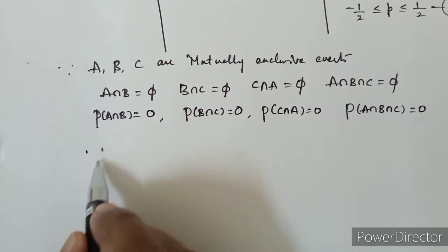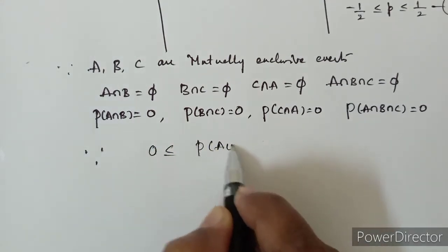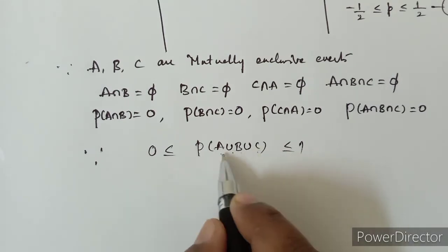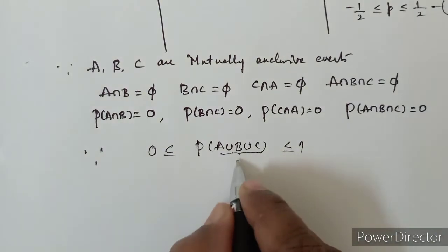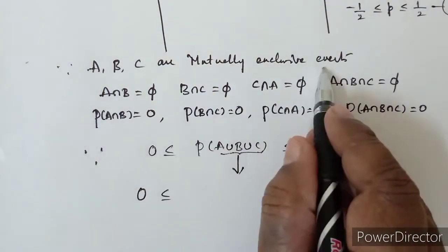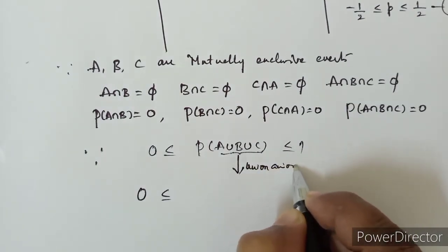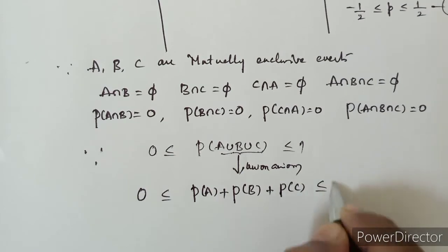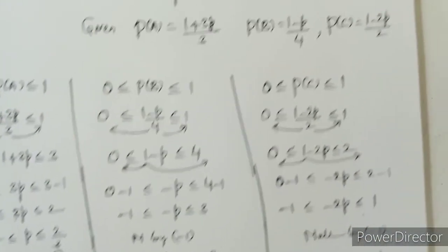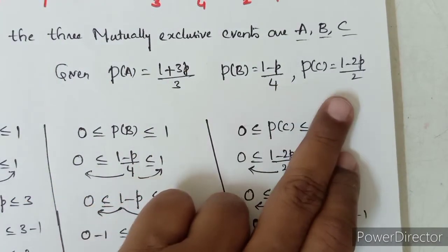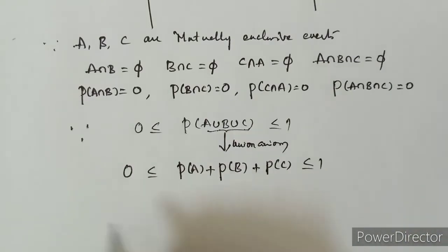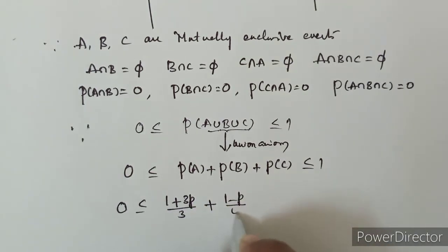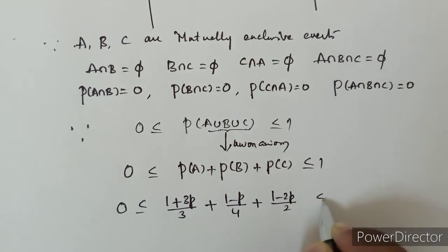Since for any event probability always lies between 0 and 1, the event A∪B∪C also has probability between 0 and 1. Applying the addition theorem for mutually exclusive events using the union axiom, we can write: 0 ≤ P(A) + P(B) + P(C) ≤ 1. Substituting the given values: 0 ≤ (1+3p)/3 + (1-p)/4 + (1-2p)/2 ≤ 1.